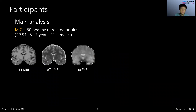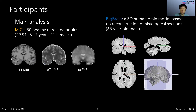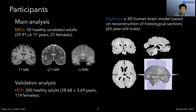In the main analysis, we studied 50 healthy unrelated adults. Our participants have quality-controlled T1-MRI, quantitative T1-MRI, and resting-state fMRI. We also studied BigBrain, a three-dimensional human brain model based on reconstruction of histological sections. To validate our findings, we repeated our main analysis using the HCP dataset with 200 healthy adults.